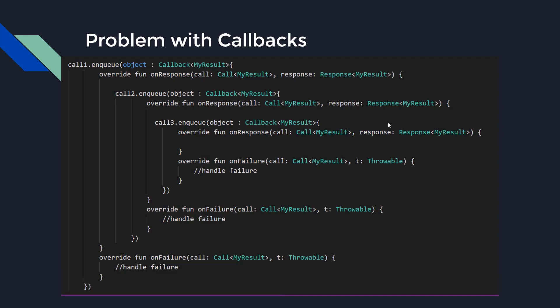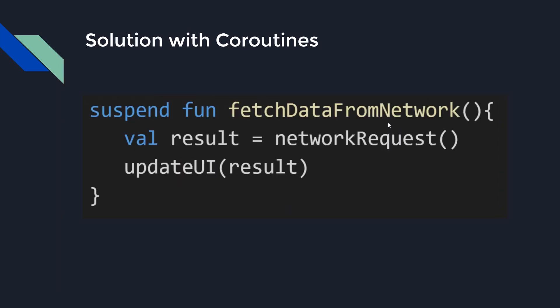And this is what we are going to learn in this playlist — we will solve this problem using coroutines and learn a lot more things about Kotlin coroutines. So let's see the first solution with coroutines. It is the same as before; we just added a new modifier suspend to our function fetchDataFromNetwork. Suspend basically means this function needs a coroutine to execute, so we cannot call a suspending function directly — we need a coroutine to call a suspend function.